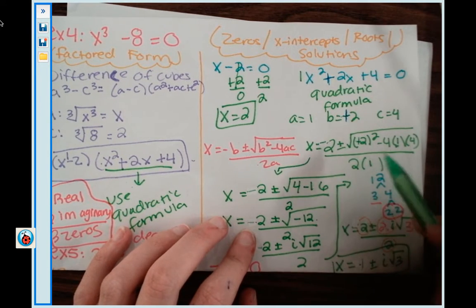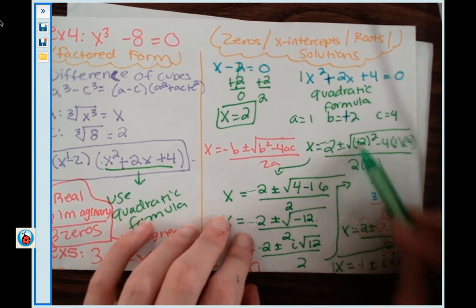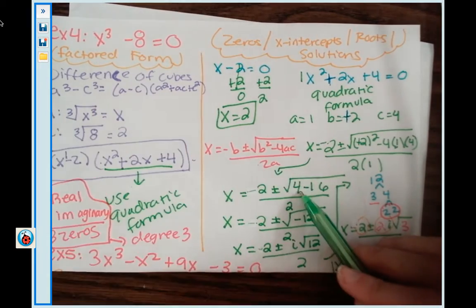Now the rest of the work, you guys, isn't going to change, because 2 times 2 still gives me a positive 4. So we're good to go there.